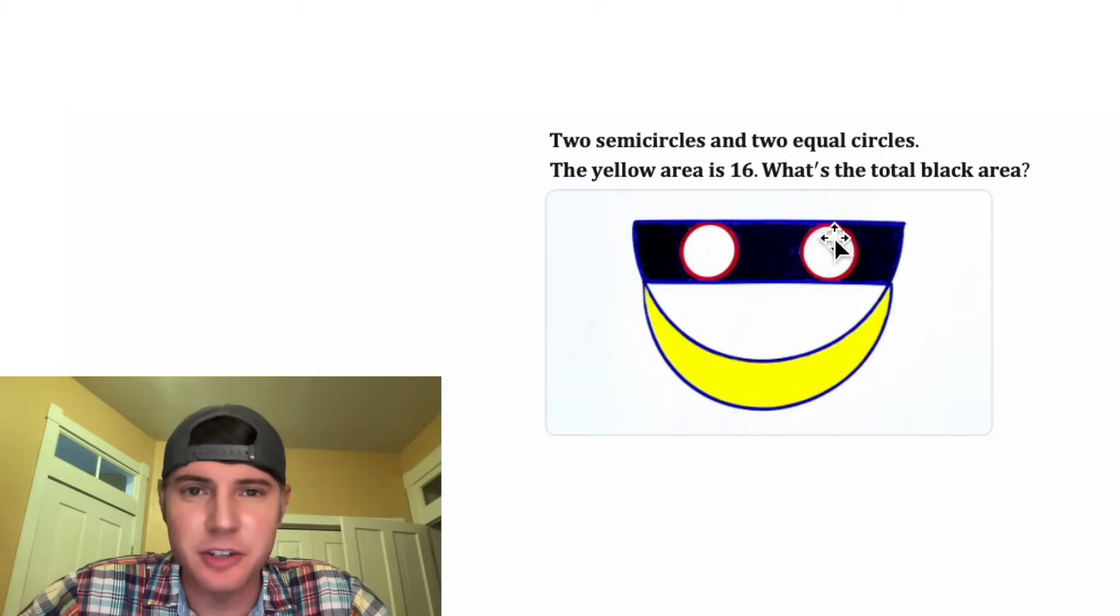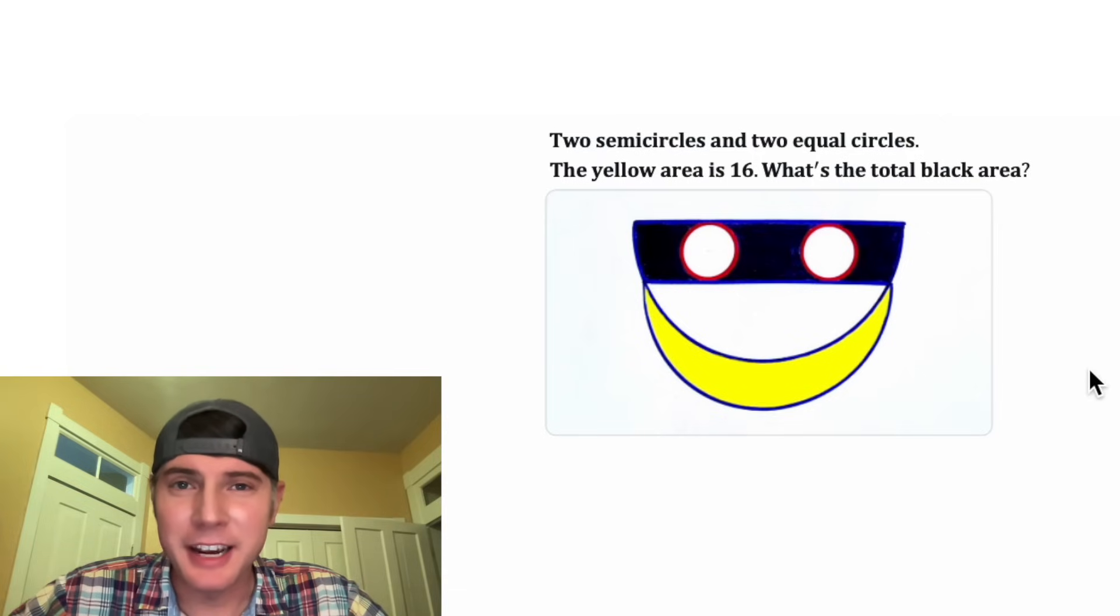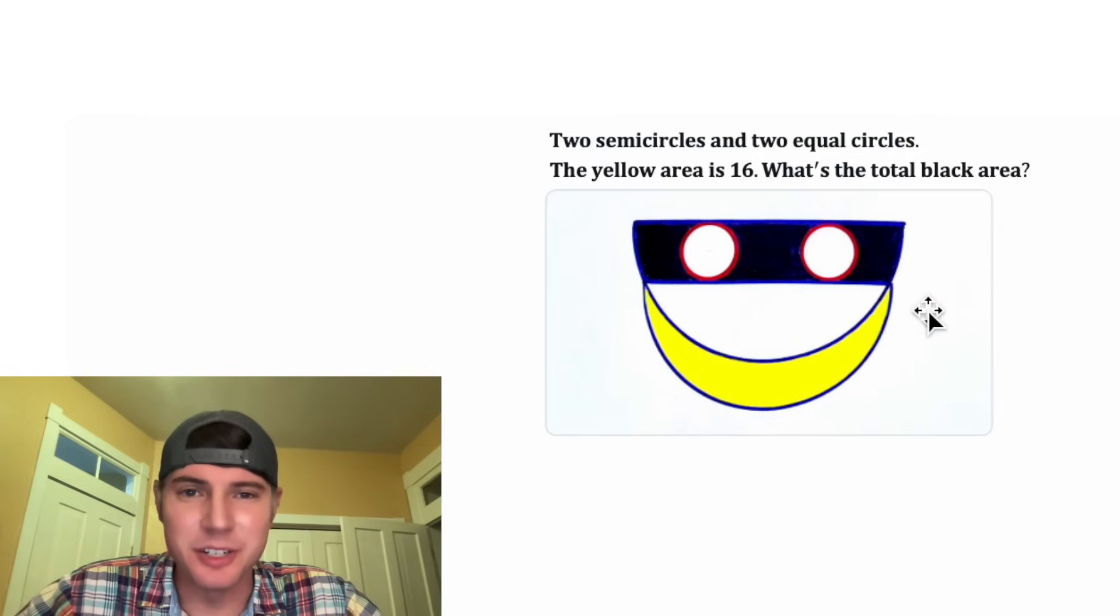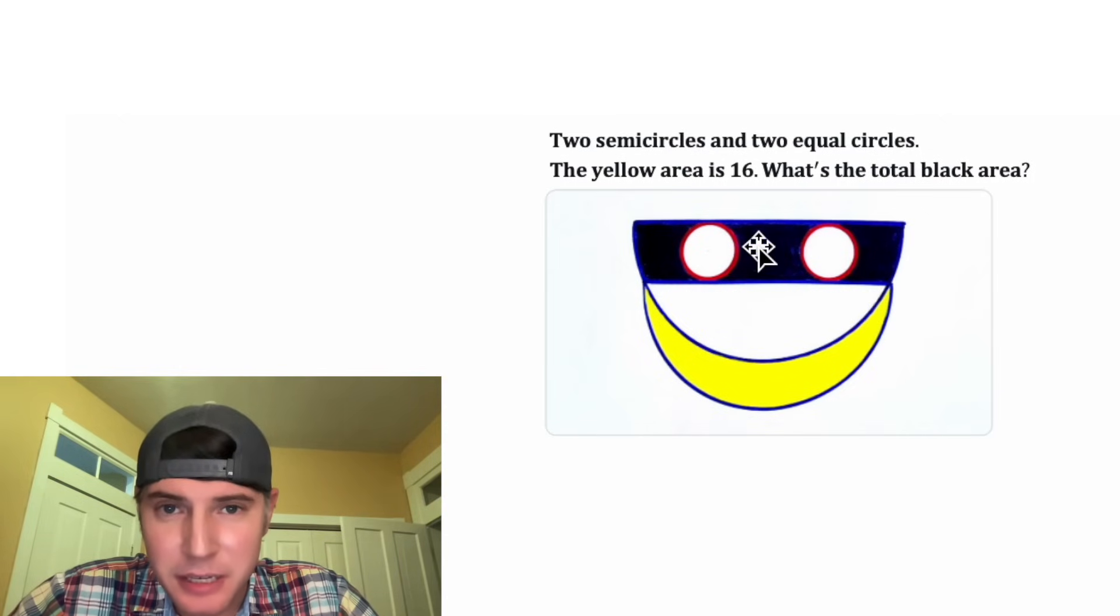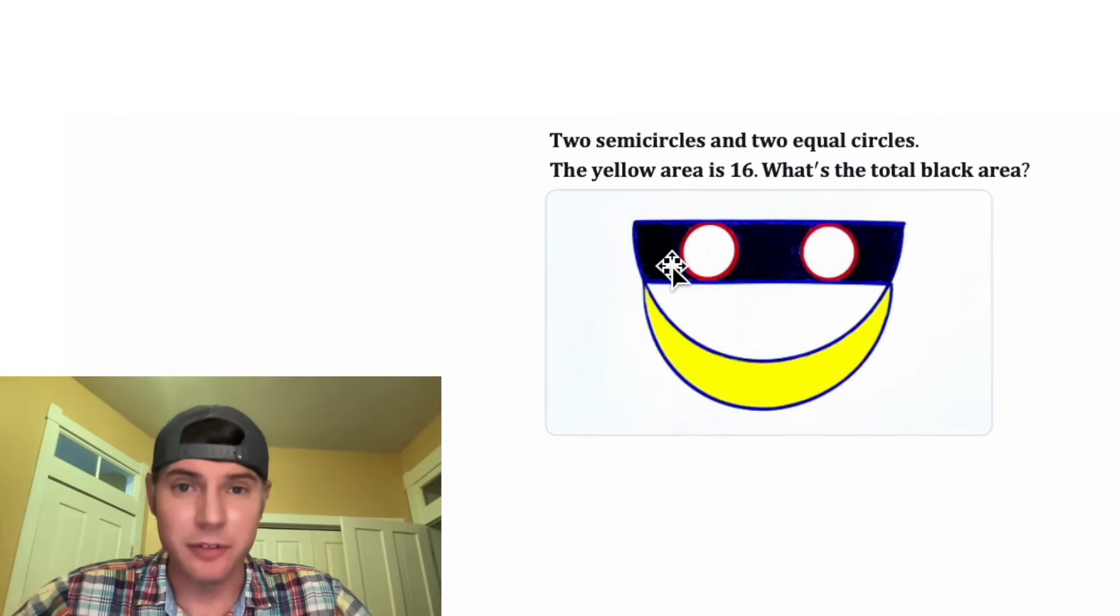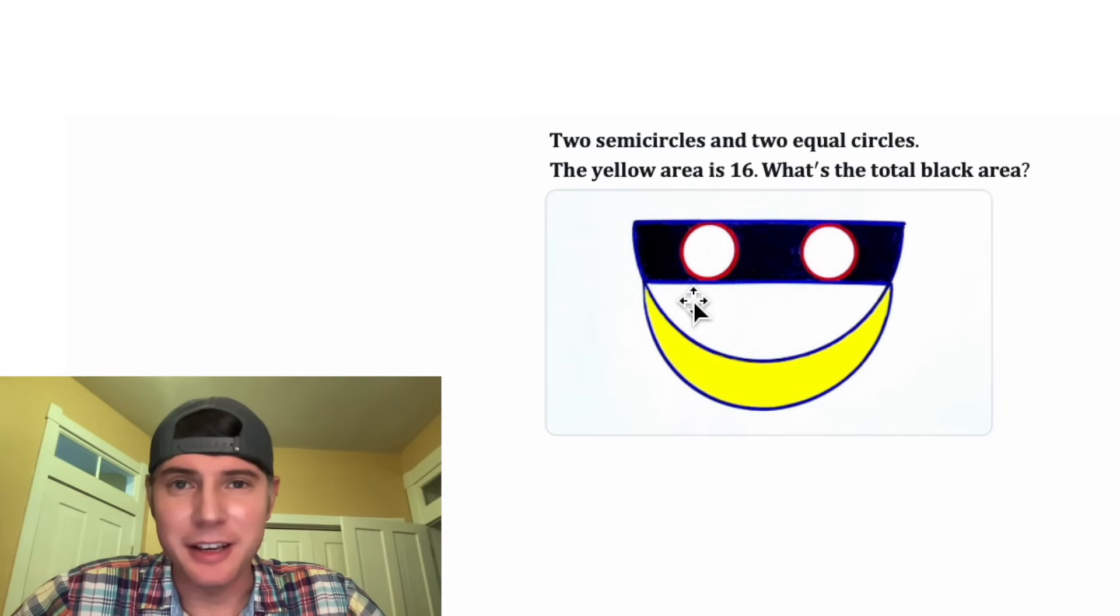this looks like a fun one. We're given two semi-circles and two equal circles. And I kinda like that it looks like a smiley face. It's giving us that the yellow area is equal to 16 and it wants to know what is the total black area. So that's gonna be this stuff with the circles cut out of it. The circles are not part of the black area.